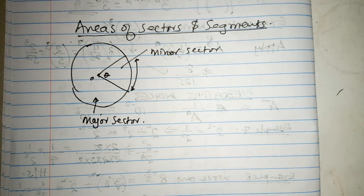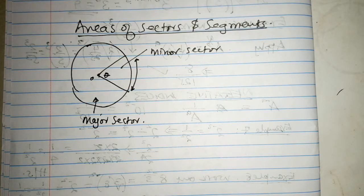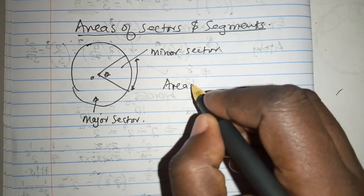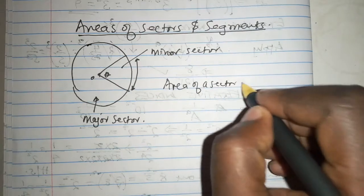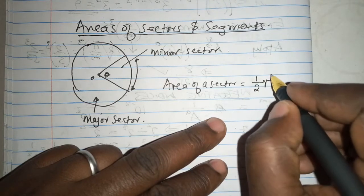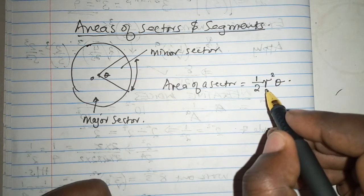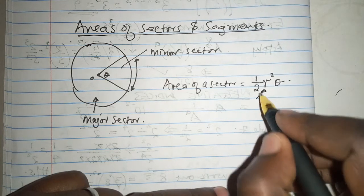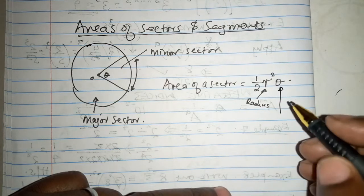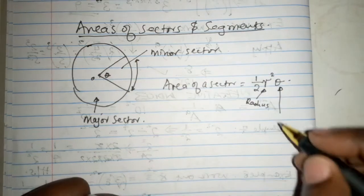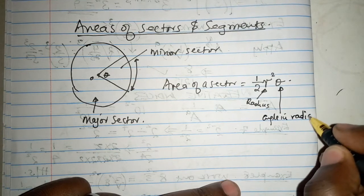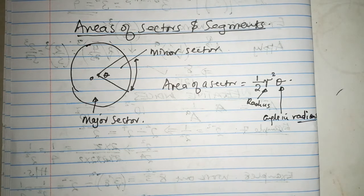Now, for the area of a sector, it is very important to note that area of a sector is given by the formula, very simple formula, have R squared theta, where R is the radius, this is the radius of the circle, and this is the angle in radians obtained by the arc to the center. So, this is the angle in radians.